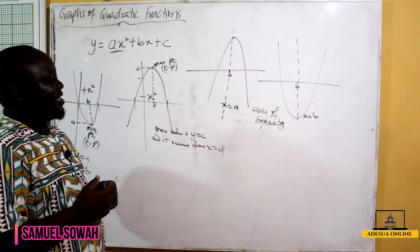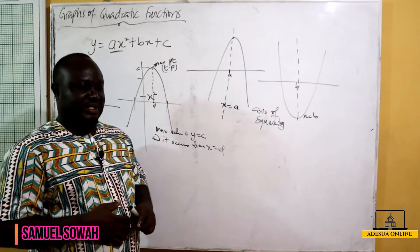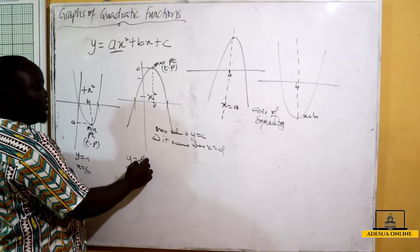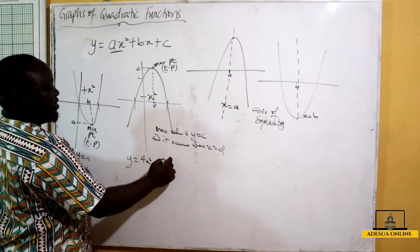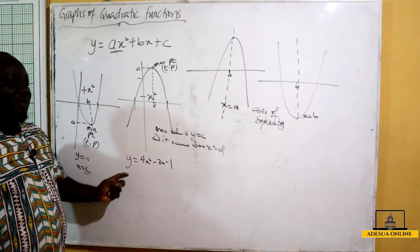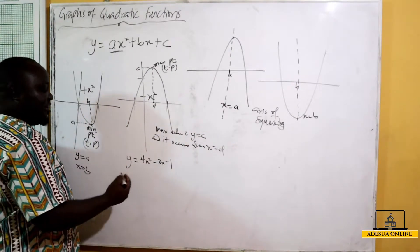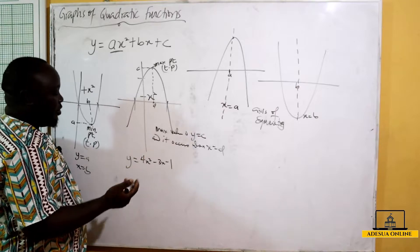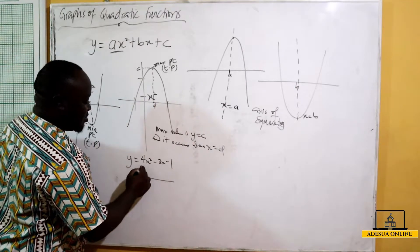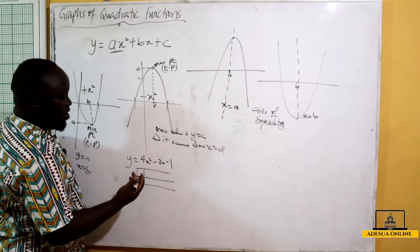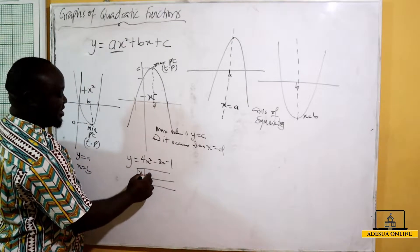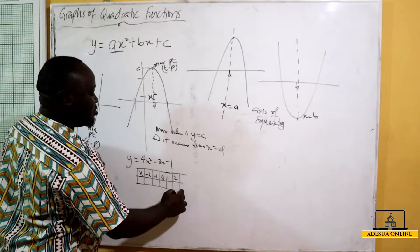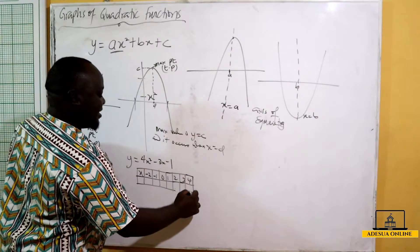When solving questions under quadratic functions, you can be given a function y = 4x² - 3x - 1 and asked to work with it over a range of values. For example, they might tell you x ranges between negative 2 and positive 4. You draw a table where all values are integers: x = -2, -1, 0, 1, 2, 3, and 4.